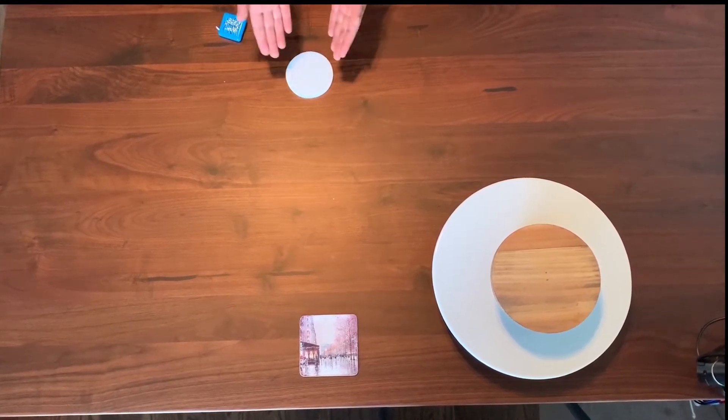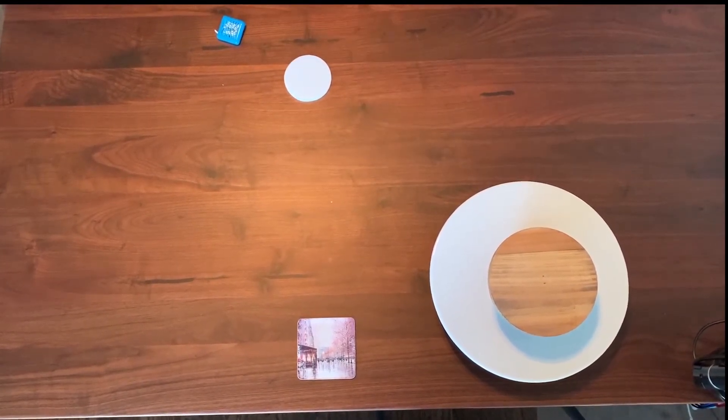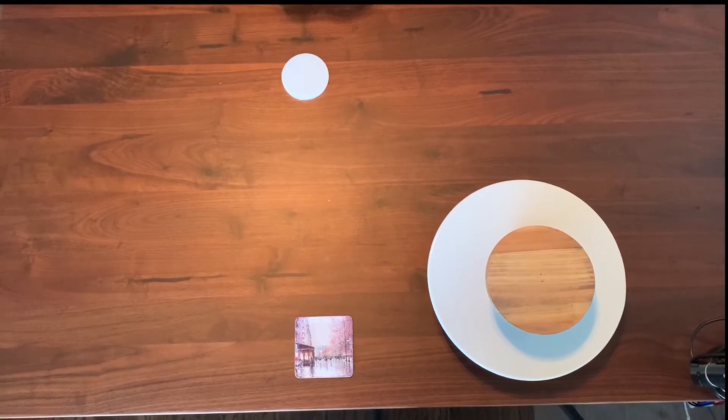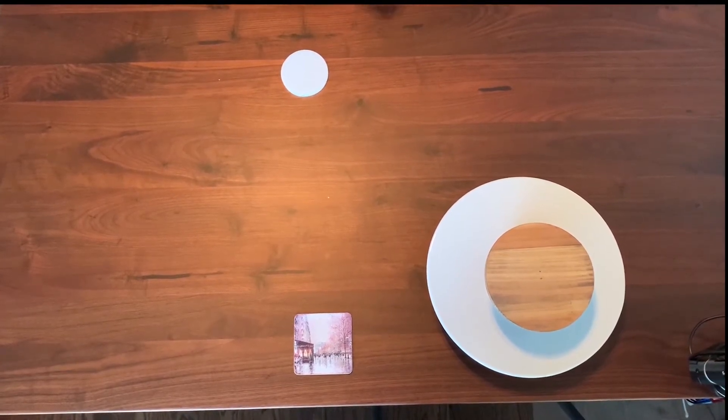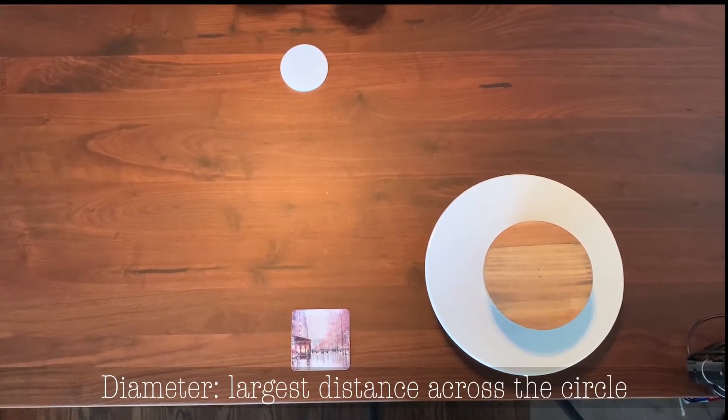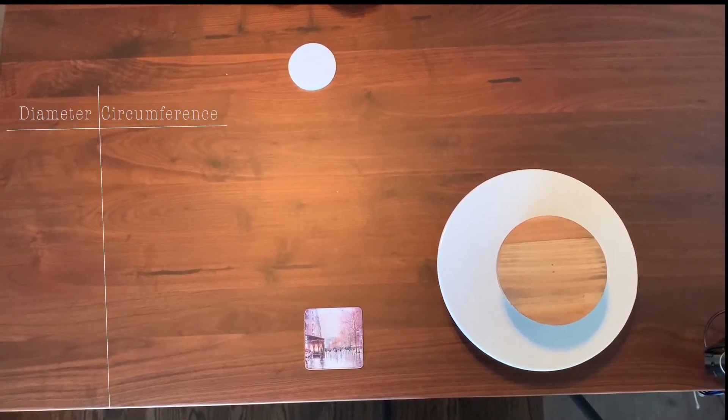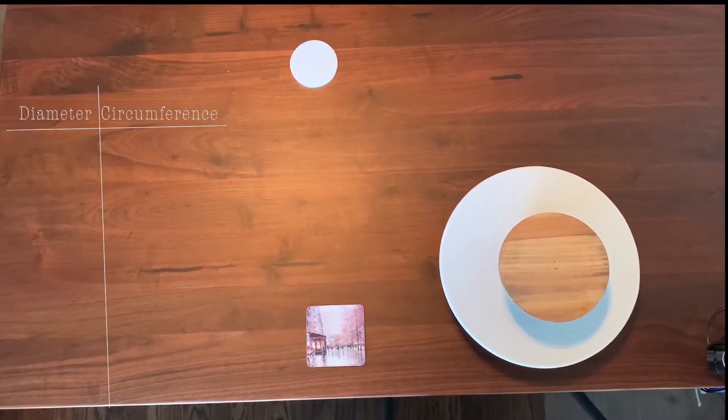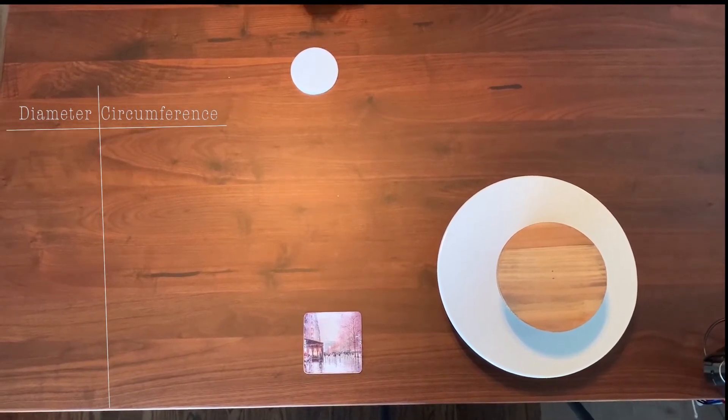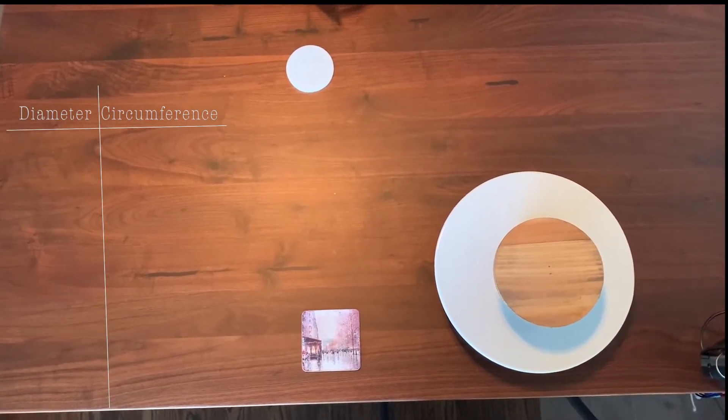So here I have a coaster and two different cake stands. Using my measuring tape, I'll measure the diameter of the circle, which is the largest distance across the circle. When we are graphing a function, we want a table. This table will have two columns: one will be the diameter of the circle, and the other one will be the circumference of the circle.